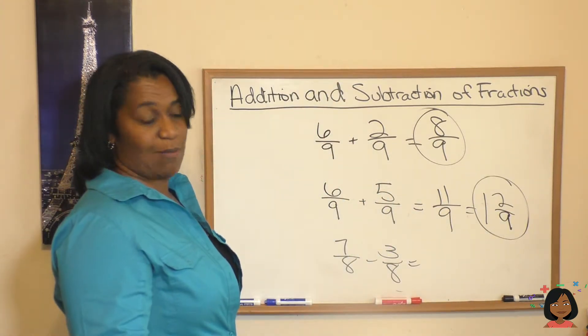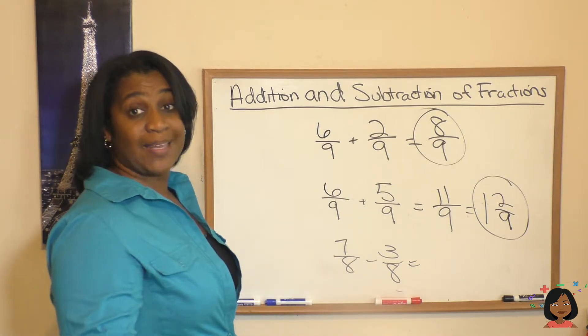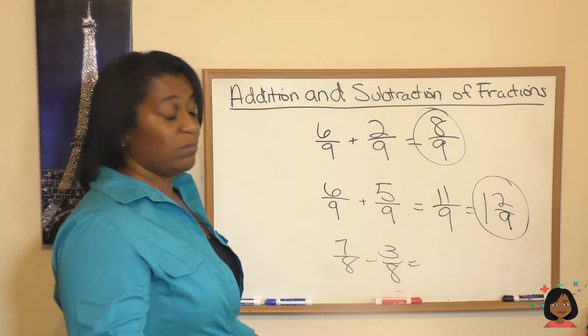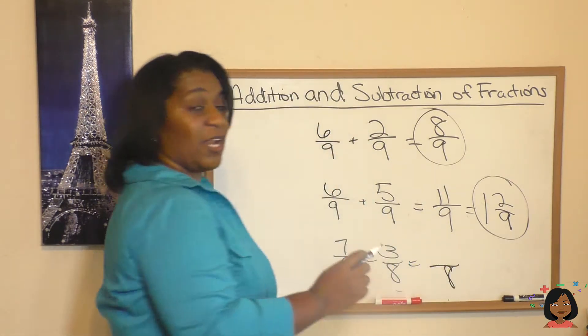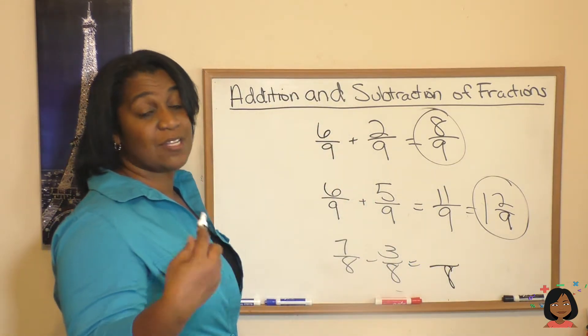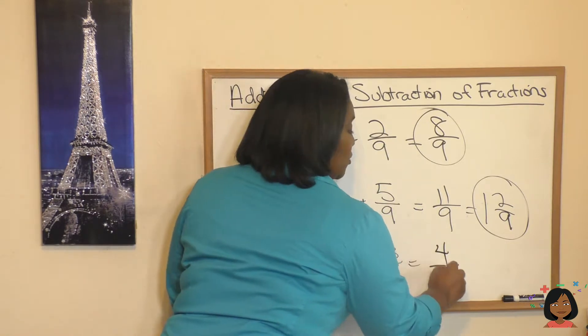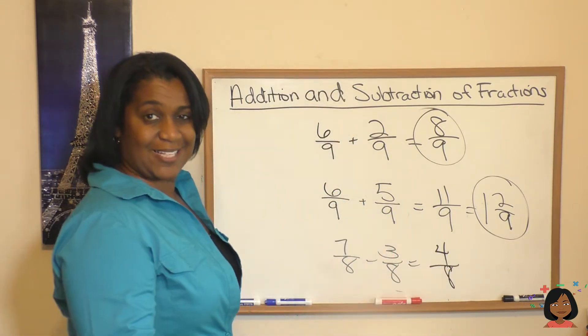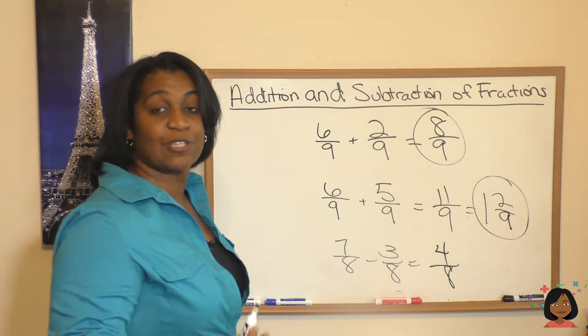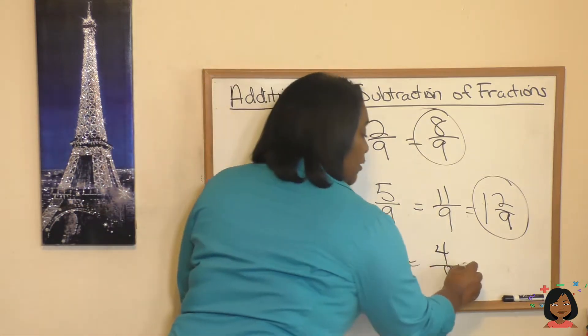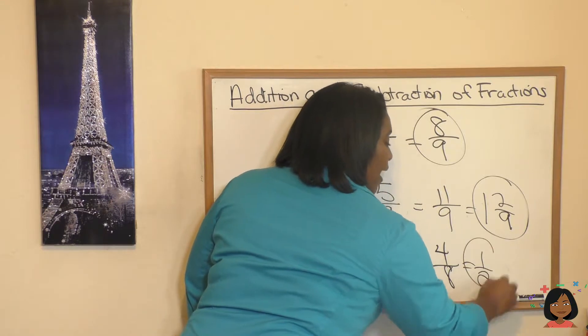Let's do a subtraction problem. 7 eighths minus 3 eighths. Well, again, denominators are the same, so we can keep that. And we're going to handle the numerators. 7 minus 3 is 4. But you know we're going to keep the 4 eighths like that. Nope.